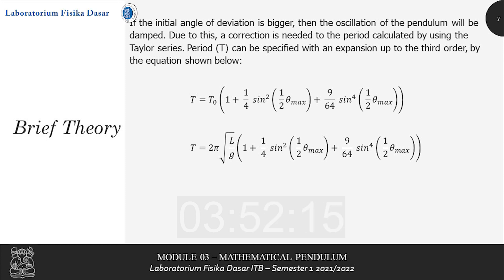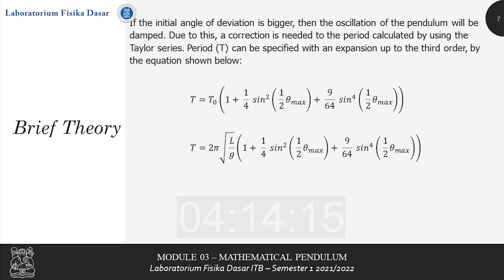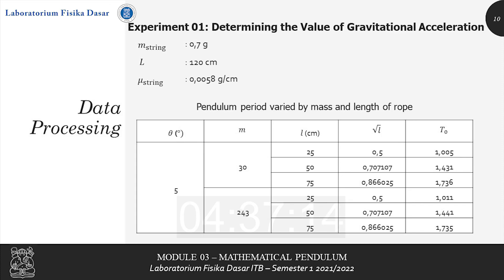Due to dampening, a correction is needed to the period, calculated using the Taylor series. The theoretical period t can be expanded up to the third order: t equals t0 multiplied by the correcting factor in brackets — 1 plus (1/4)·sin²(θ_max/2) plus (9/64)·sin⁴(θ_max/2). Based on the earlier explanation, t0 can be substituted by 2π times the square root of l divided by g.